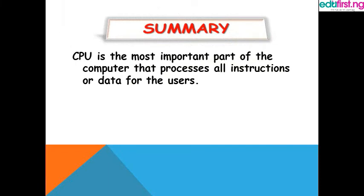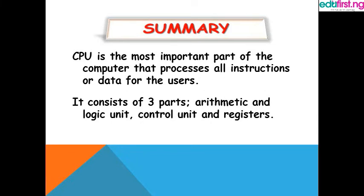In summary, we've discussed the CPU as the most important part of the computer that processes all instructions and data for the user. It consists of three parts: the arithmetic and logic unit, the control unit, and the registers. The arithmetic and logic unit performs arithmetic operations — addition, subtraction, multiplication, division — and logic operations such as greater than, less than, and greater than or equal to. The control unit guides the operation of the ALU, the memory, and the registers by sending signals and commands.